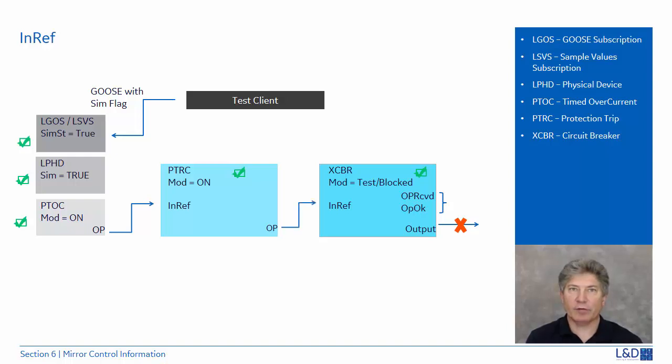Triggering a trip condition to operate flag, which in turn triggers the circuit breaker element to operate. The OP received and operate okay are returned back to the test client for validation.